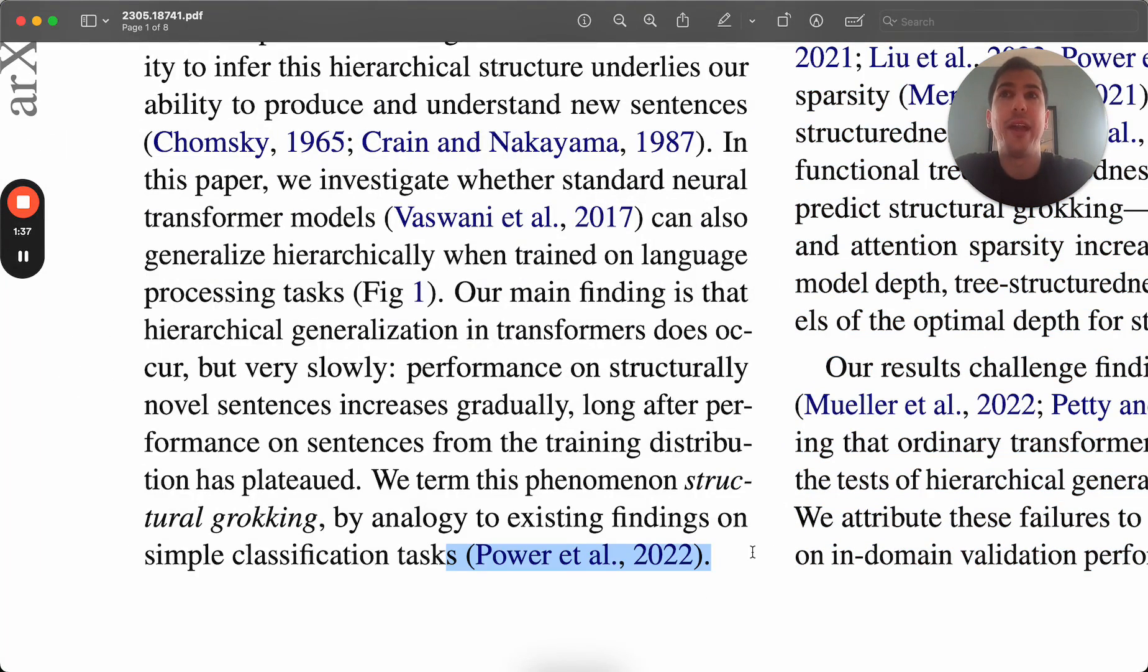And this is all built on the work that's been done previously on grokking by Power et al. back in 2022, where they show that for some types of problems, when you train a transformer model, you will reach a decent enough validation accuracy, but the model has not generalized. And if you show it out-of-domain data that still matches the type of problem, but isn't exactly the same setup as the training, it's not going to do well.